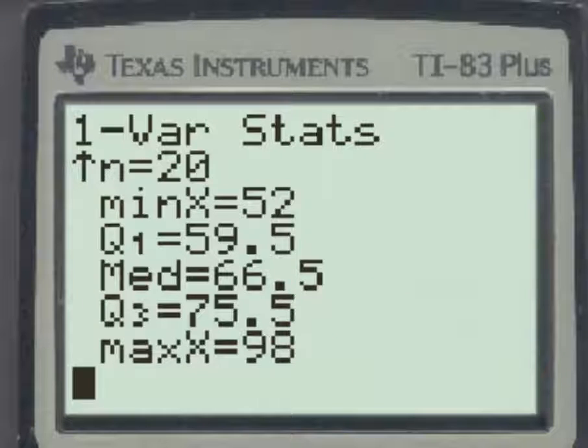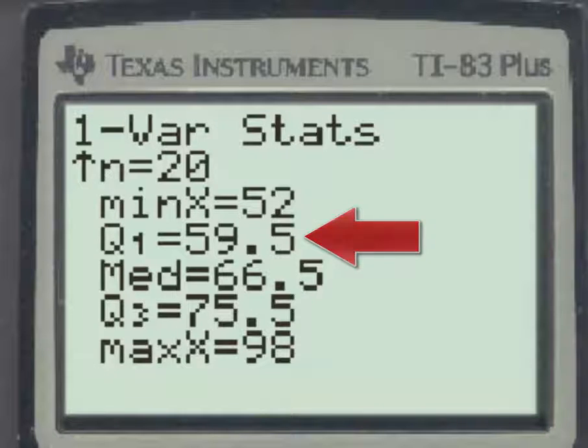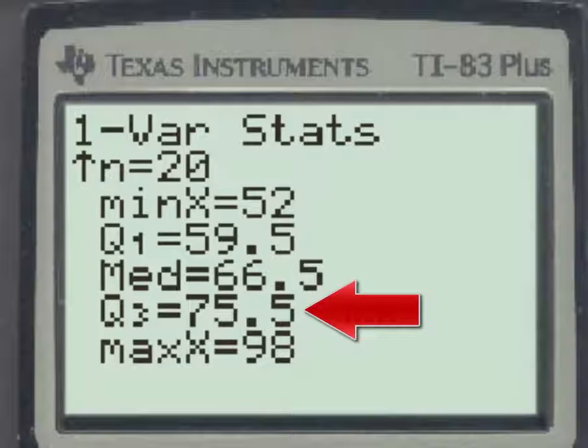If we were asked to find the first quartile, the answer would be Q1 = 59.5. Similarly, the third quartile would be Q3 = 75.5.